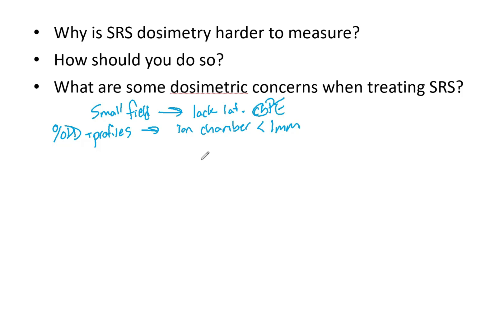In terms of dosimetric concerns for SRS — not just for QA but in general — what we care about is tumor type, because that changes how we treat it and the dose we prescribe. Location is a huge factor, as targets are often in tricky locations surrounded by OARs. You want to consider different fractionation schemes. Larger tumors typically receive smaller doses because more normal brain tissue, optic chiasm, and lens will receive higher doses.